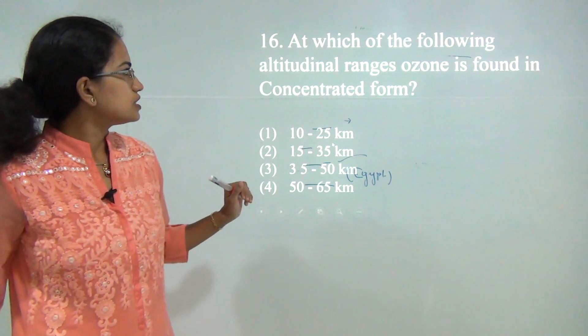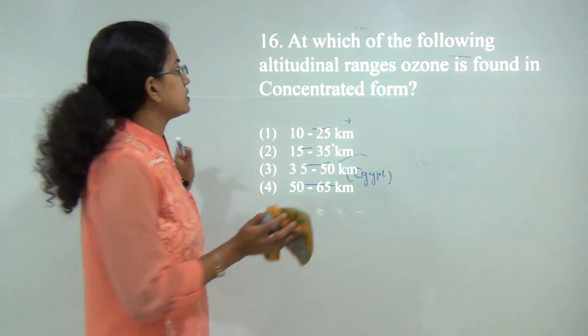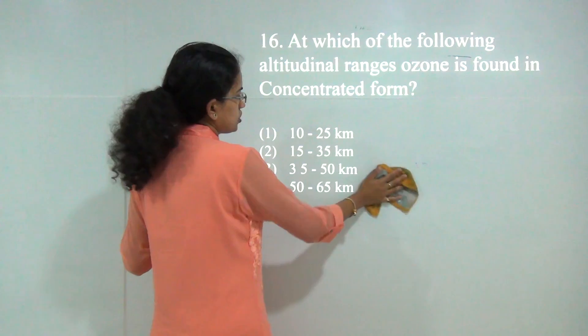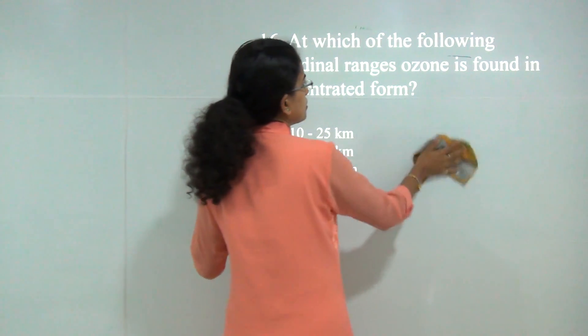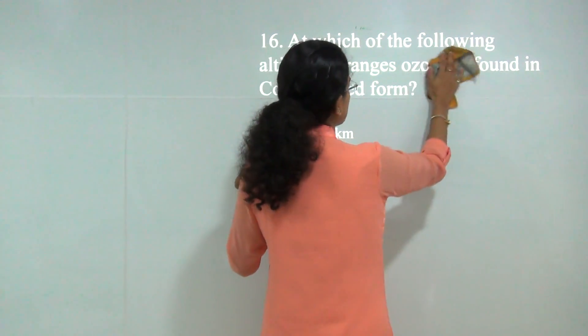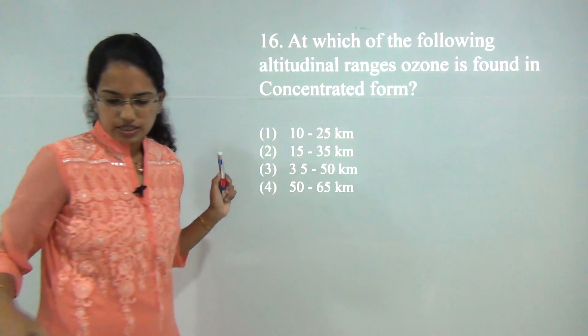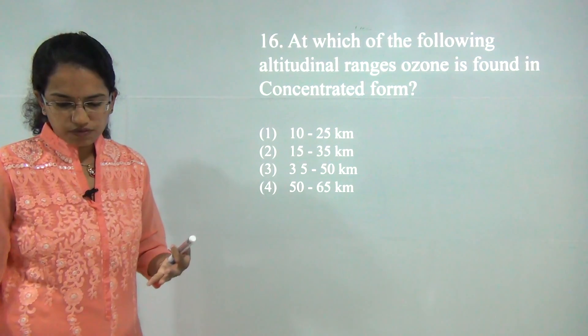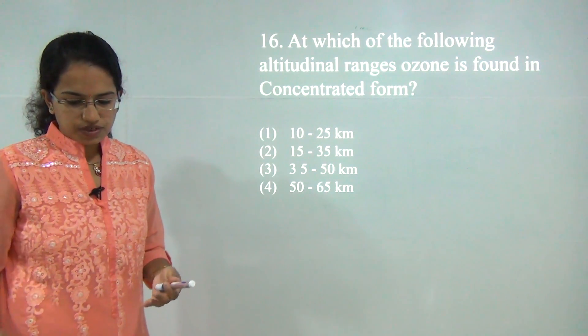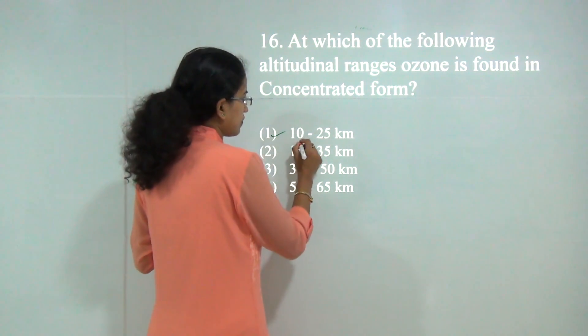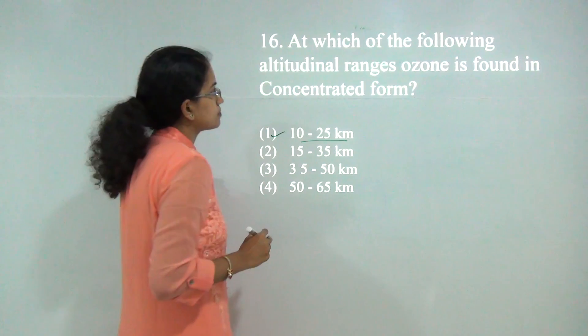The next question: at which altitudinal range do you find ozone? Ozone is concentrated in the layers of the stratosphere. So the correct answer would be 10 to 25 kilometers.